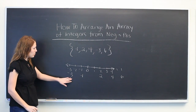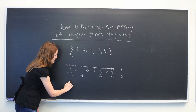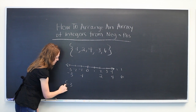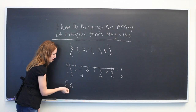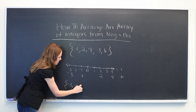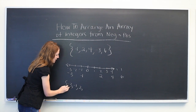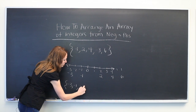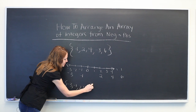Now we can come down and write our answer in array form, with brackets and commas in between, simply from left to right: minus 3, minus 1, 2, 4, and 6.